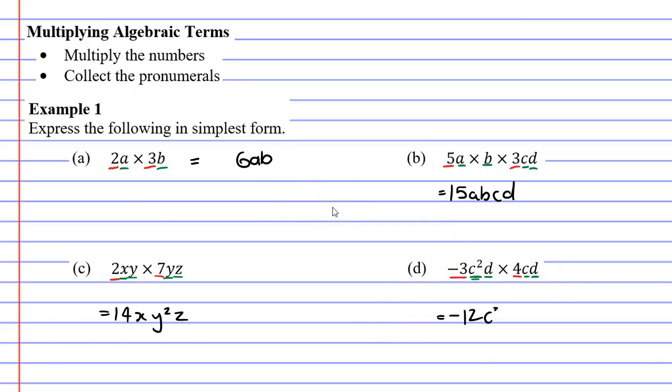And we had two D's, so we need to do D to the power of 2, giving us a solution of -12C³D².